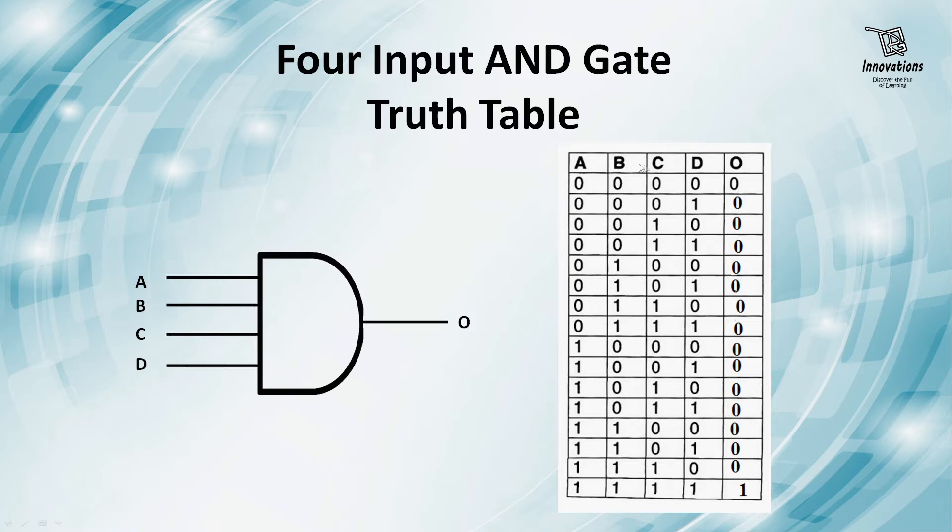Looking at the truth table where A, B, C, D are inputs and O is the output, all outputs are zero when one or all inputs are zero. Only when all inputs are one is the output one. So the output is one in only one case: when all inputs are high. Otherwise, in all other cases, the output is zero or low.